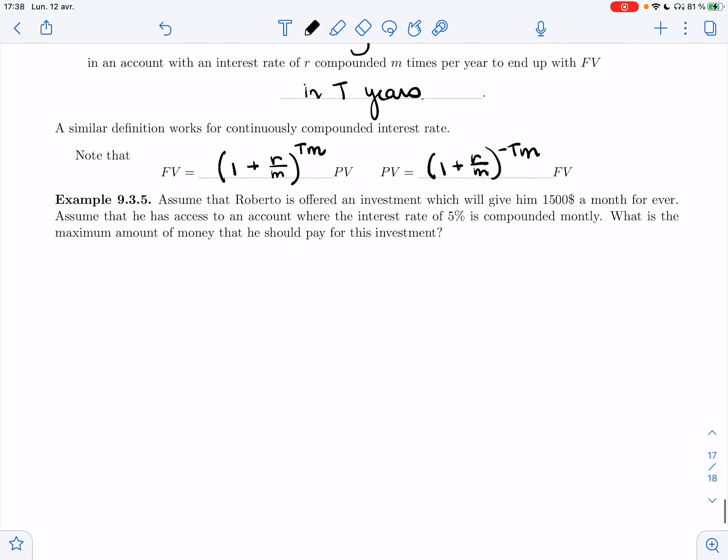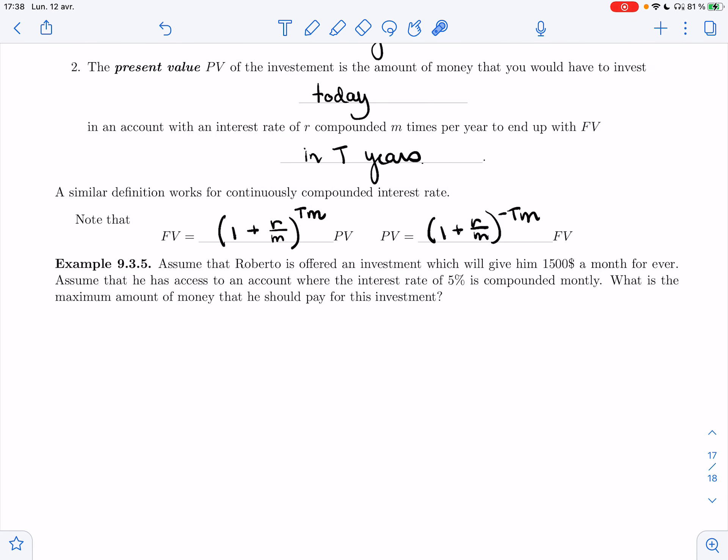Final example. Assume that Roberto is offered an investment which will give him $1,500 a month forever. So this is $1,500 a month in 20 years and 40 years and 50 years and 1,000 years forever. Assume that he has access to an account where the interest rate of 5% is compounded monthly. What is the maximum amount of money that he should pay for this investment?